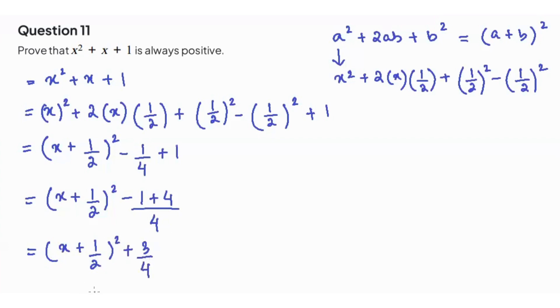So now if we look at the factorized form, we can see that 3 over 4 is a positive number, and any term which is squared is positive as well. So the value of x plus 1 over 2 whole square would also be positive. Hence whenever we factorize x squared plus x plus 1, the result will always be positive. And if we keep it as it is in its quadratic form, that would also be positive.